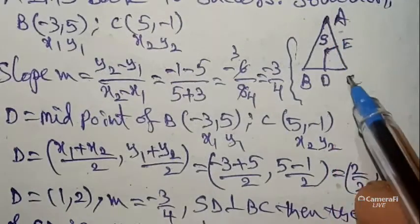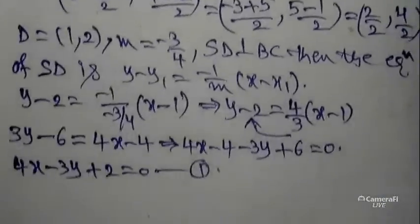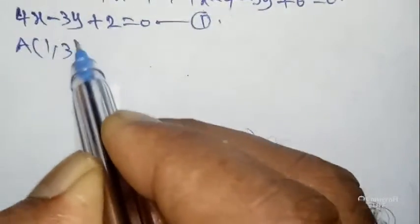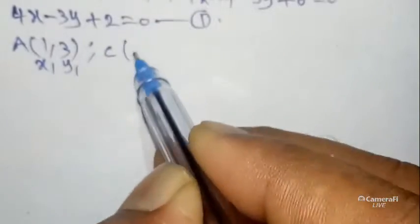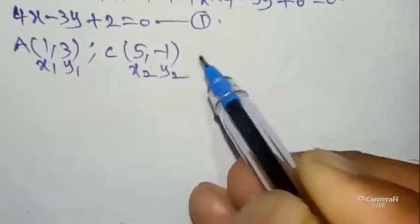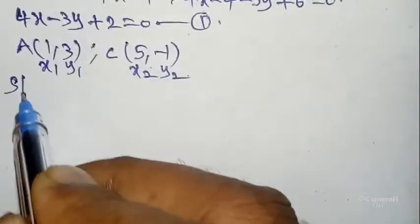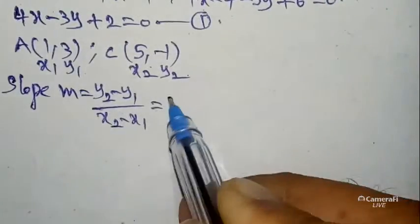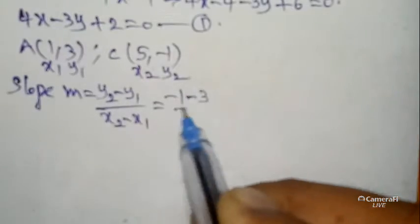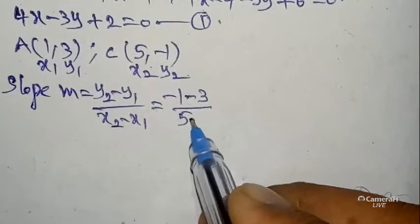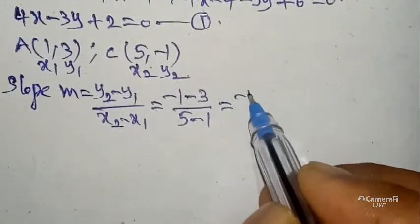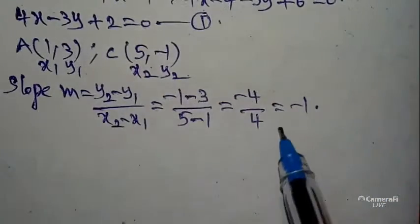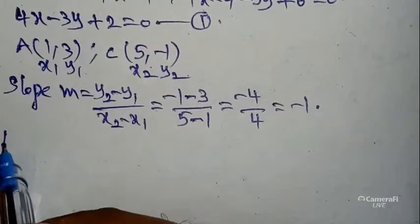SE is perpendicular to AC. A is (1, 3) — let it be (x1, y1) — and C is (5, -1) — let it be (x2, y2). Slope m = (y2 - y1)/(x2 - x1) = (-1 - 3)/(5 - 1) = -4/4 = -1.